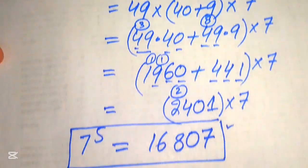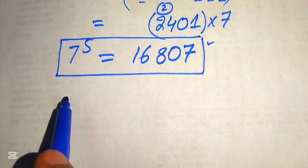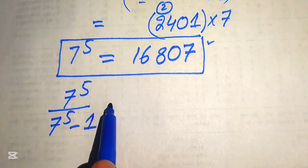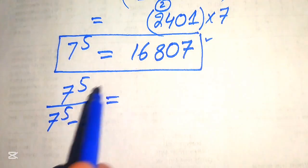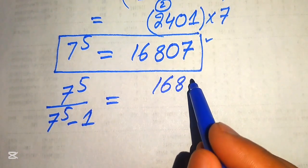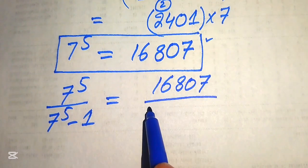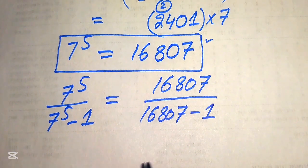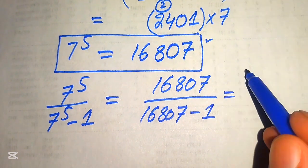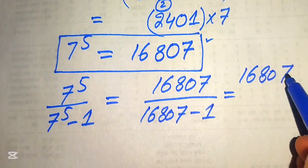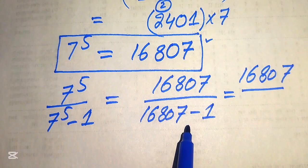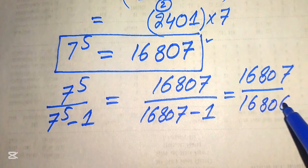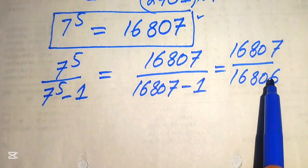Our given question statement is 7 to the power of 5 divided by 7 to the power of 5 minus 1. We substitute the value: this becomes 16807 divided by 16807 minus 1. Subtracting the denominator: 16807 minus 1 equals 16806. So we have 16807 divided by 16806. Now we focus on the upper term.